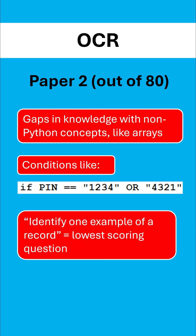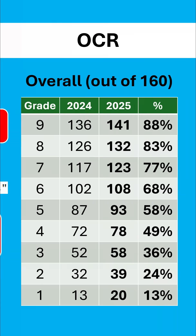Interestingly, the worst question on the paper was where you had to identify a record, which is a row in a database table. Here are the overall grade boundaries — we can see an increase from previous years. It is very tight at the top end, so really well done if you've got grades seven to nine in particular.